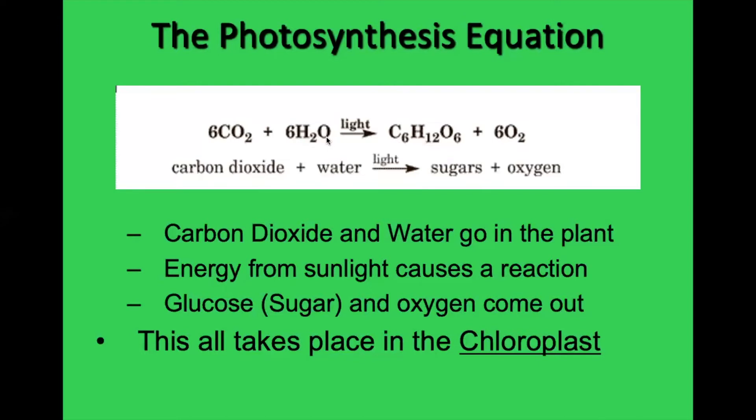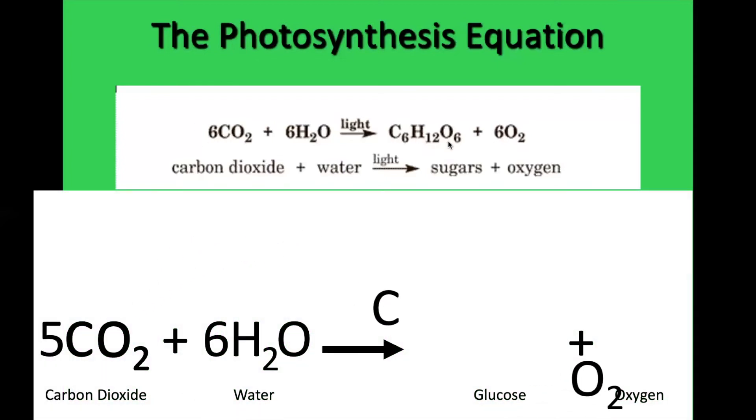And then six waters. Well, H2 times six is H12. And then O times six is O6. So now we have six carbons, six waters, and water is hydration. So carbohydrate. We made a glucose molecule, which is a type of sugar, by the way. If I didn't say that before, I'm saying it now. This is a type of sugar.